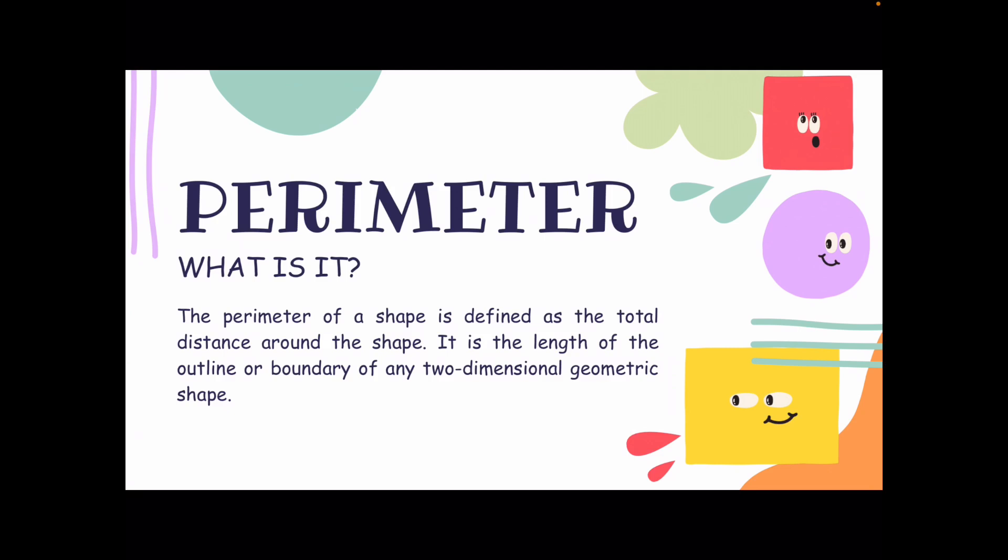For perimeter, the perimeter of a shape is defined as the total distance around the shape, so of a 2D shape, it is going to be the outside lengths.